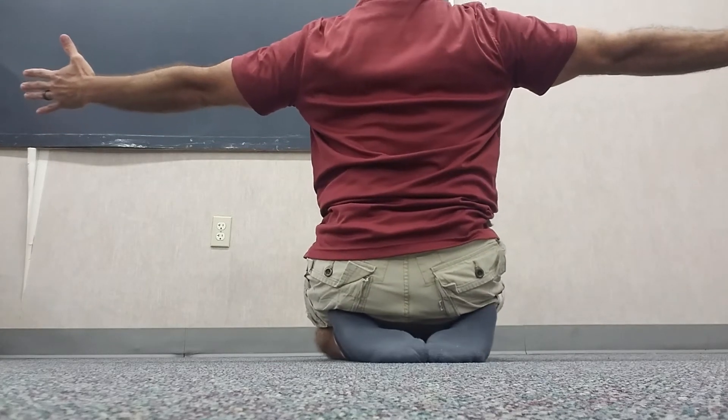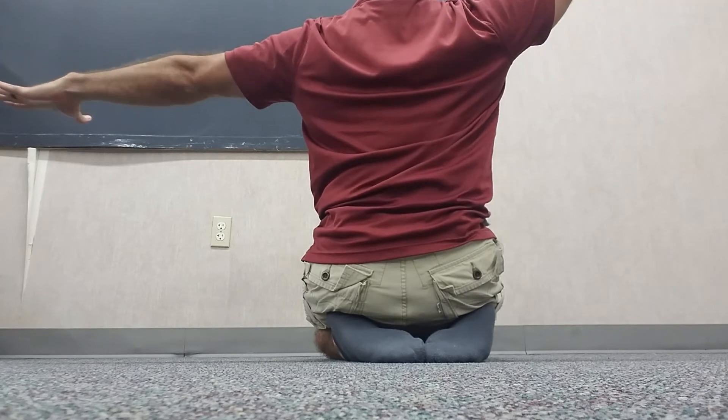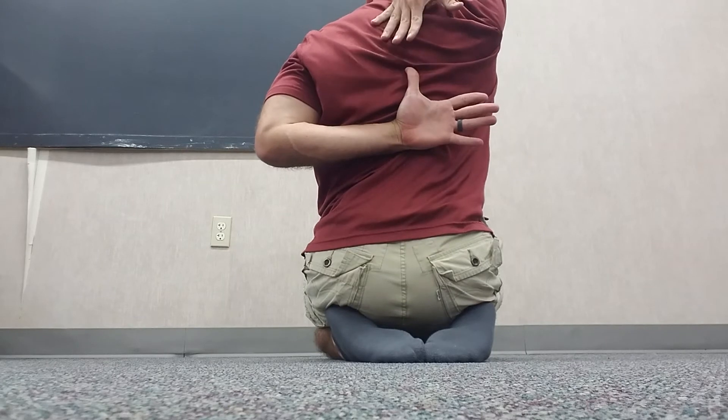I'm going to start with my arms all stretched out like this, reaching out to the sides, and then I'm going to reach my right hand over and my left hand under and try to get them as close to each other as possible.